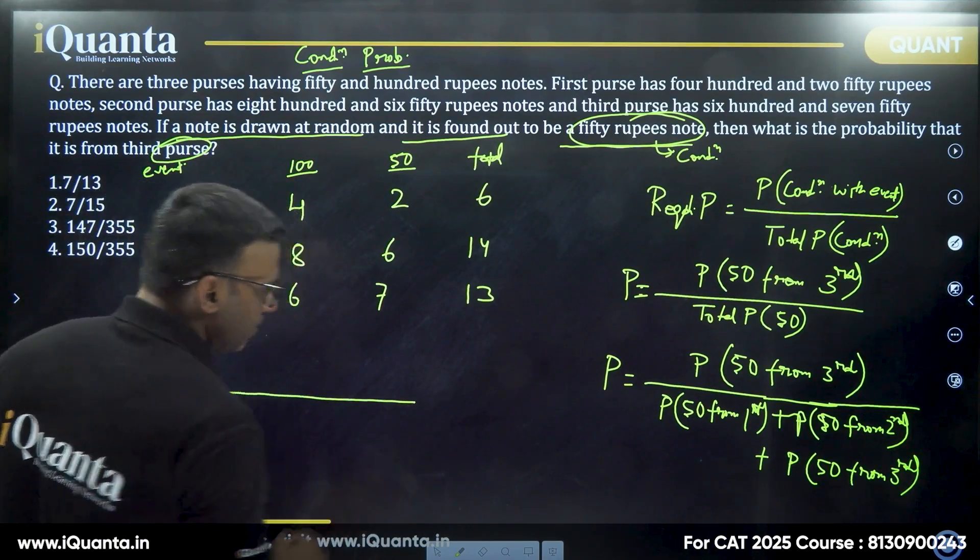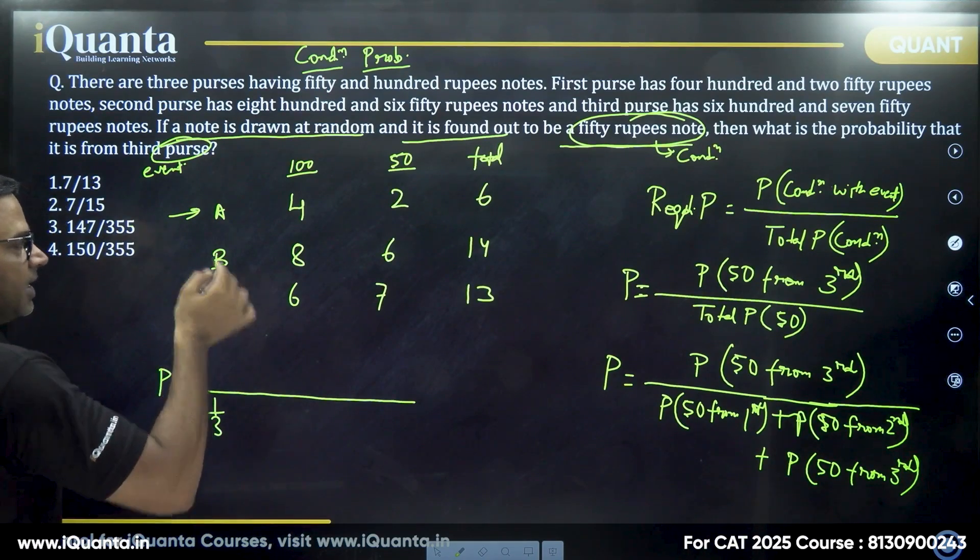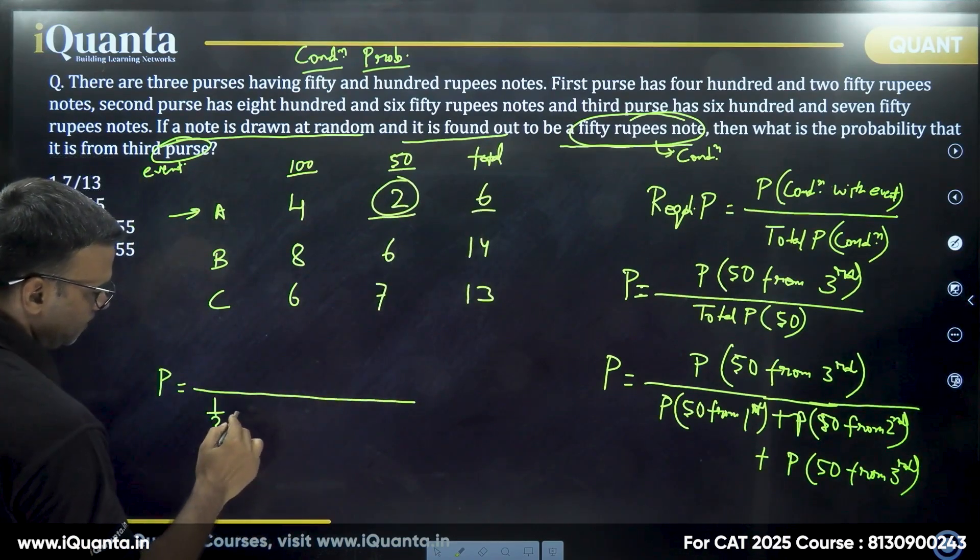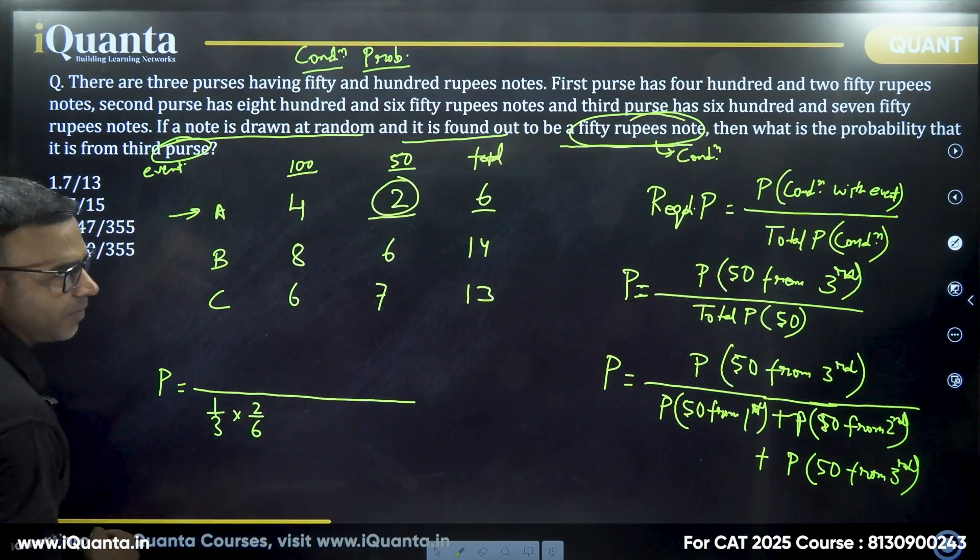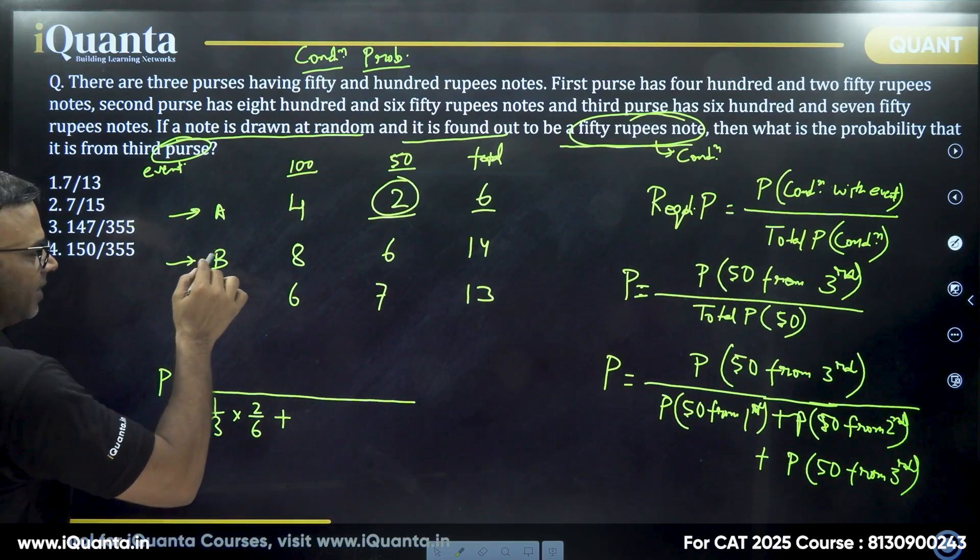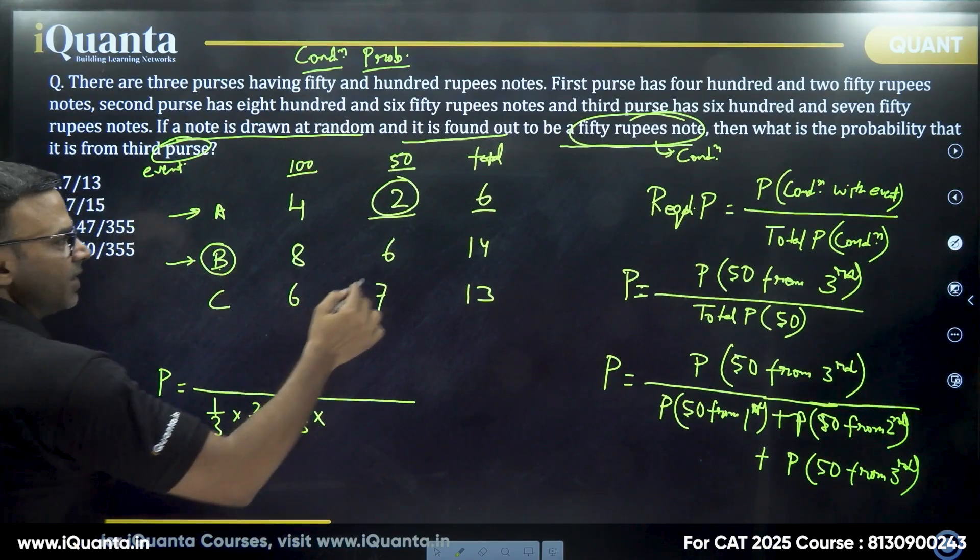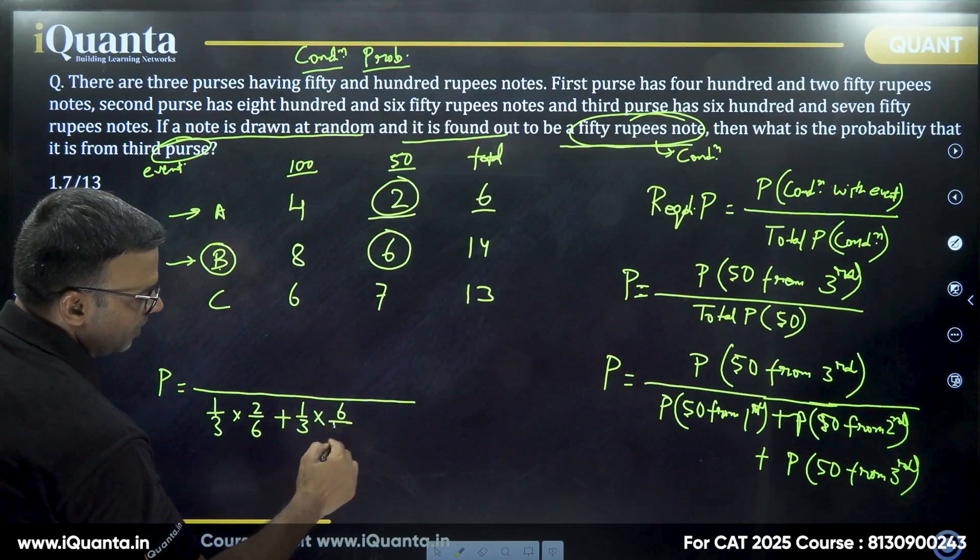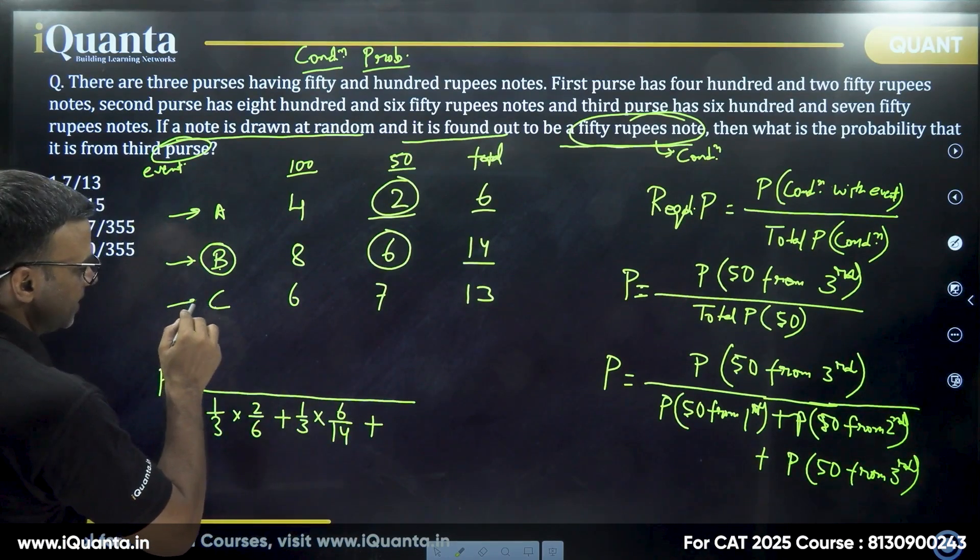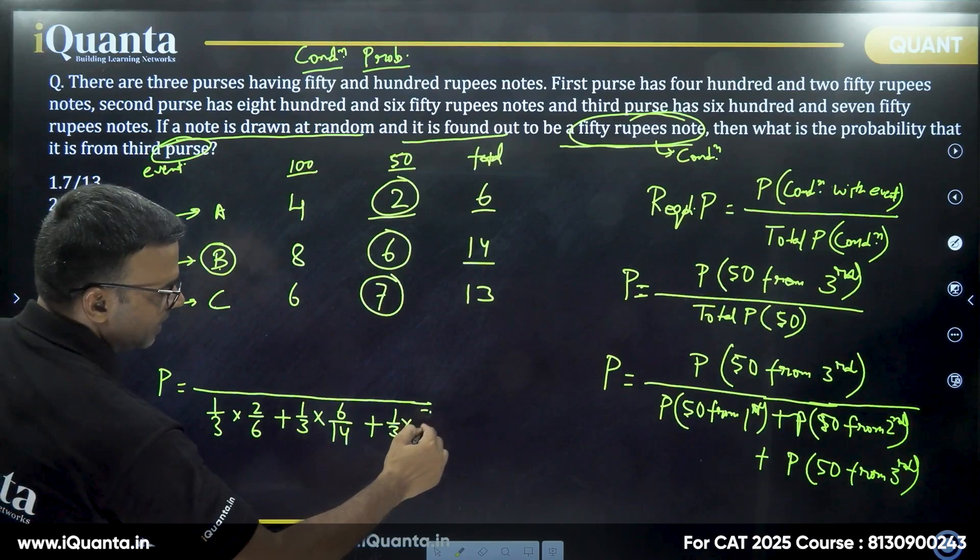And that is, so first let's calculate the denominator. The probability that I choose the first purse is one by three. It's one out of three. Then within that, the probability that I choose 50 rupee note is two by six. Simple logic of probability, nothing great about that. Plus, what is the probability that I choose the second purse? So one out of three again, probability of choosing a purse is one by three. But in the second one, the probability of getting a 50 rupee note is six by 14. Be careful of the total number of notes there. Probability that I choose the third purse is one by three again. And in that, probability of getting a 50 rupee note is seven by 13.